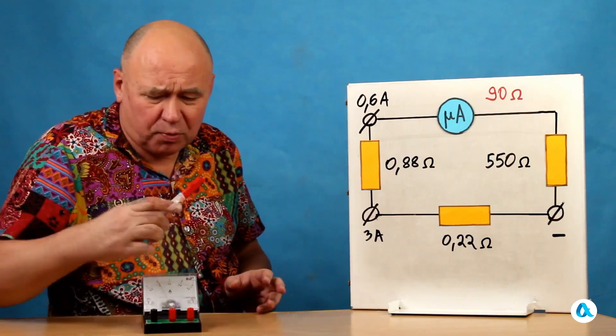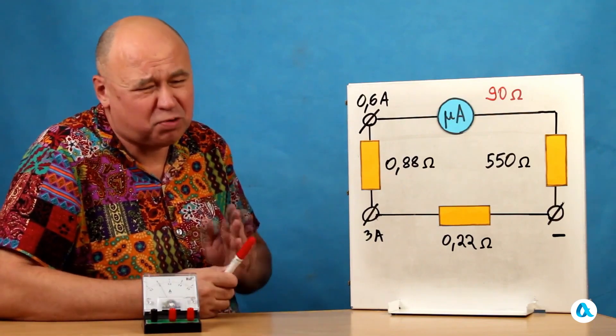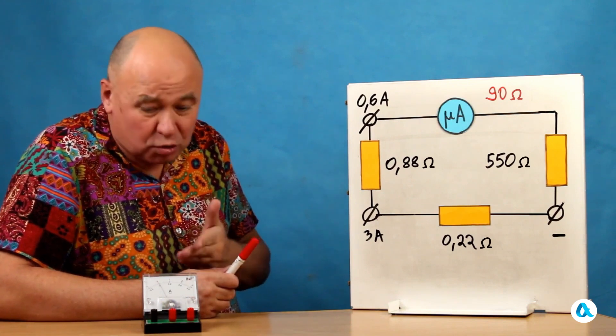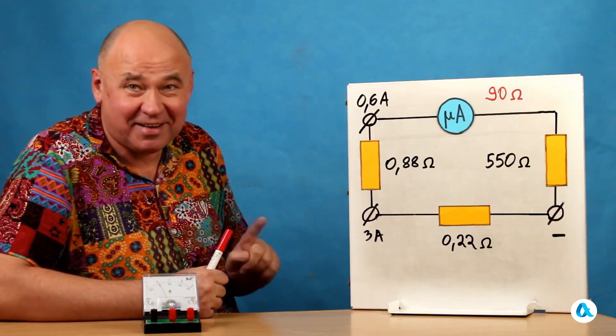If the current is higher, the needle will simply go off the scale. And even higher current will just burn it out. In other words, you absolutely cannot pass currents on the order of one ampere through it.